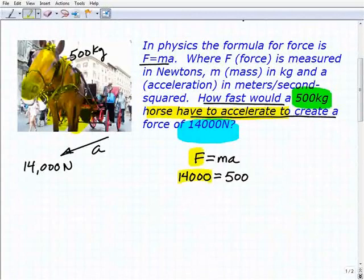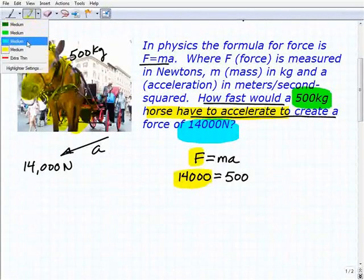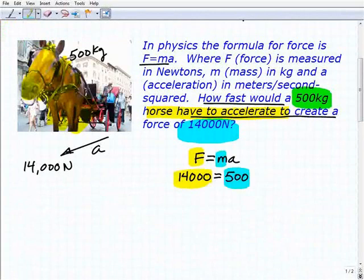So, our force is 14,000 newtons. Our mass is 500 kilograms, and how much would we have to accelerate this 500 kilograms to get 14,000 newtons worth of force? So, we have to solve for a. This is a one-step equation. So, we have 500 times a equals 14,000.